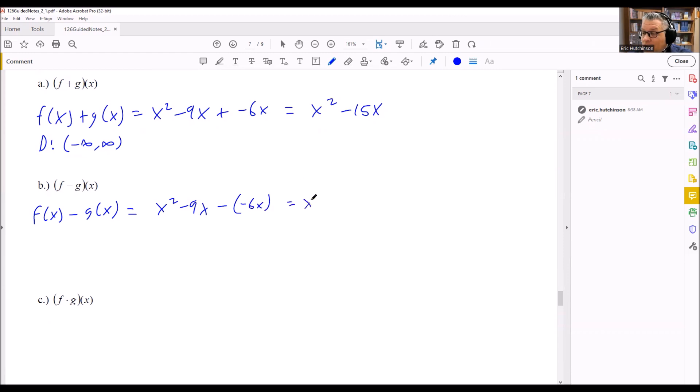So when we simplify it, it really means we're doing x squared minus 9x plus 6x, which means that this is actually x squared. We have minus 9 plus 6, so minus 3x we get for that. So that's going to be our expression for the f minus g of x.